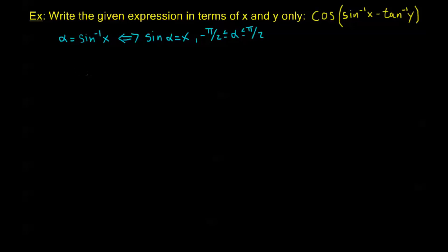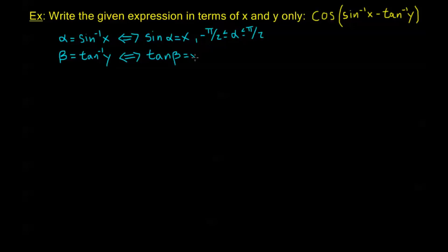Now we want to make a second substitution. Let beta equal tangent inverse of y. I don't need to — and in fact don't want to — substitute in negative tangent inverse of y. We're going to take care of that negative when we actually use our difference formula for cosine. So we use tangent inverse of y by itself here. By the definition of tangent inverse, this means tangent of beta equals y, and beta is strictly between negative pi over 2 and pi over 2.